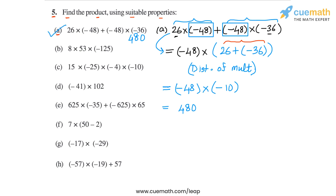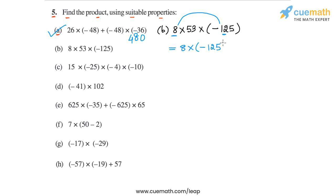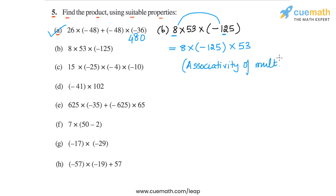Now let's go to part B. In part B, we have the product 8 into 53 into minus 125. We observe that multiplying 8 with minus 125 first will be easier. So we rewrite this product as 8 into minus 125 into 53. The property that allows us to do this is associativity of multiplication.